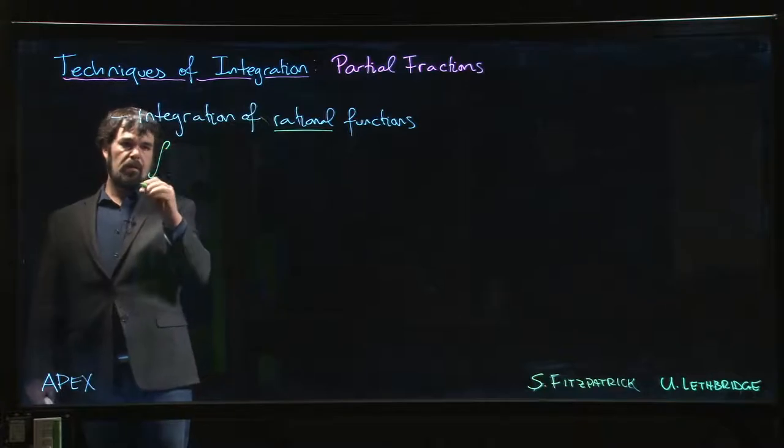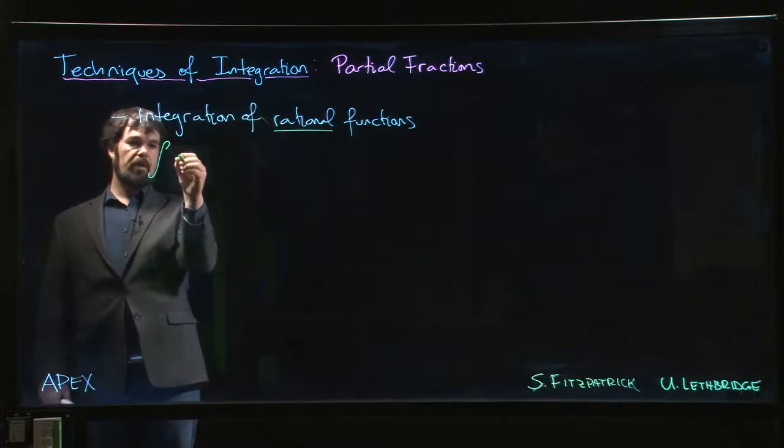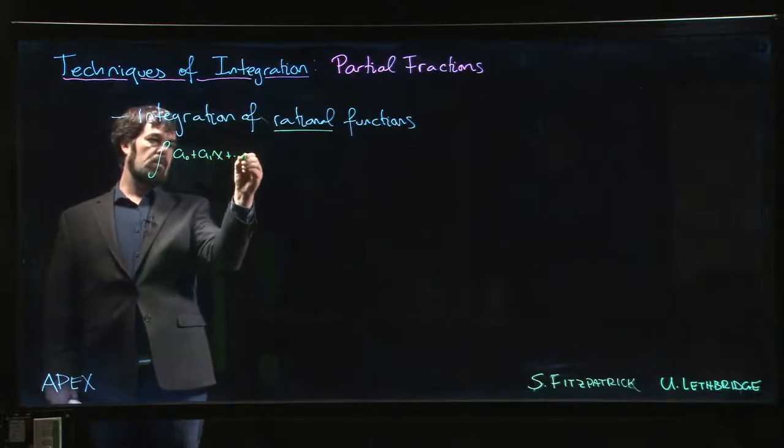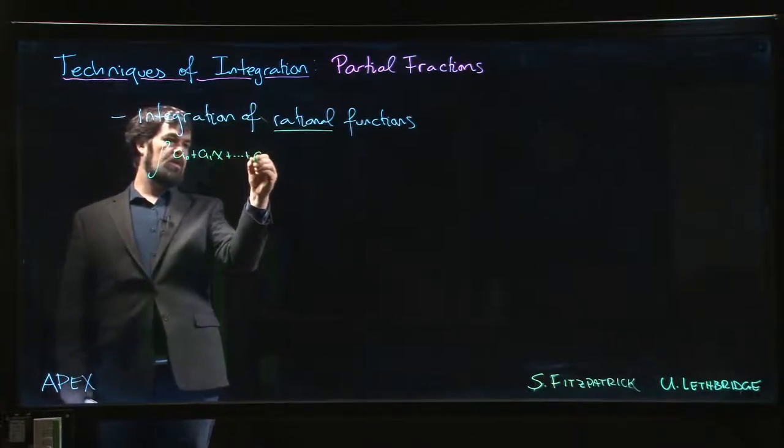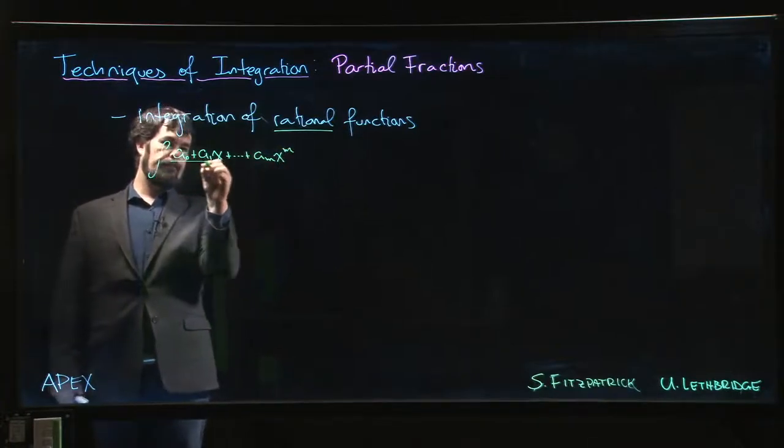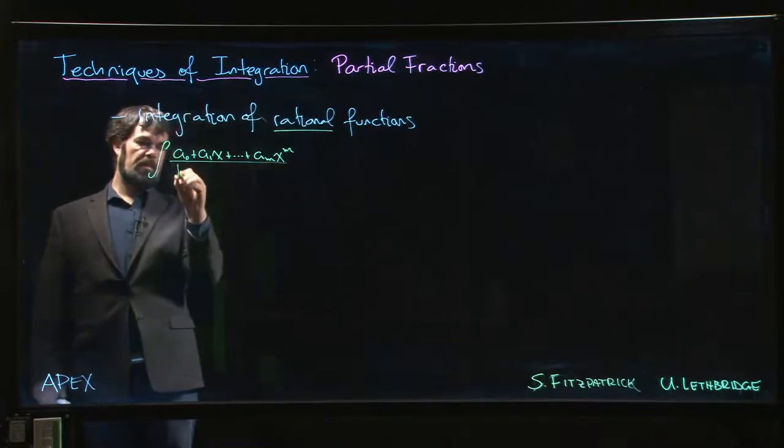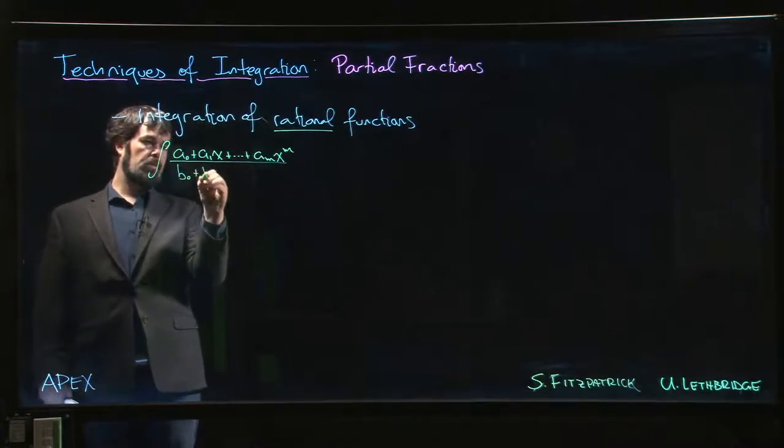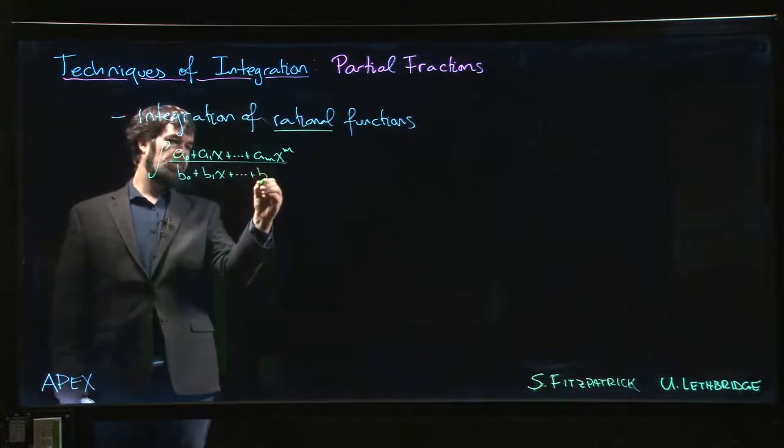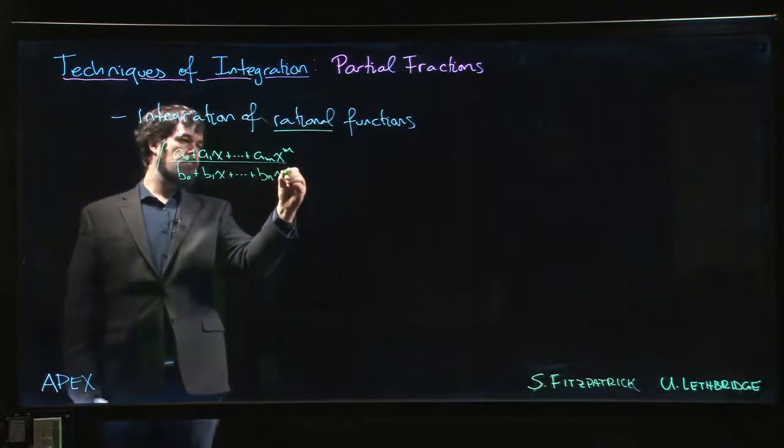Remember that by rational we mean that we're looking at integrals of the form: a polynomial on top, say a₀ + a₁x up to aₘx to the m, divided by some other polynomial, say b₀ + b₁x down to bₙx to the n.